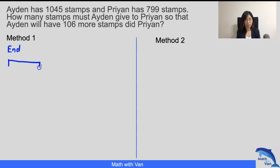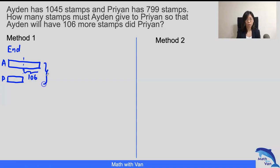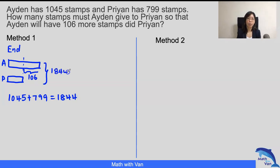Aiden having more than Brian. So Aiden and Brian, and the difference is 106. What do we know of the total? The total remains unchanged, so it's 1045 plus 799, and my answer is 1844. And with that, I can find out either of them.